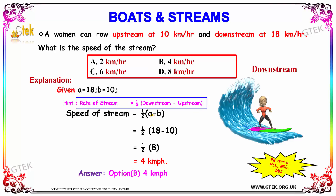So, the speed of the stream is equal to half into — your downstream is 18 km minus your upstream is 10 km — so 18 minus 10 gives you 8. Half of 8 is nothing but 4 km per hour.